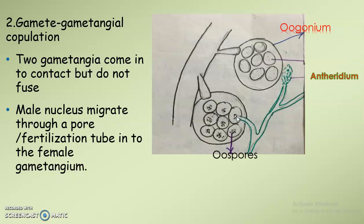Before fertilization, the oogonium contains oospheres. These oospheres are fertilized by the male nucleus, resulting in the formation of oospores. That is gametangial copulation — here the gamete and gametangium are both involved, so it is called gametangial copulation.